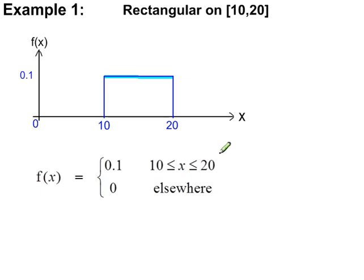so when x is more than 20 on this side and when x is less than 10, then the probability function is 0, so it's 0 elsewhere.